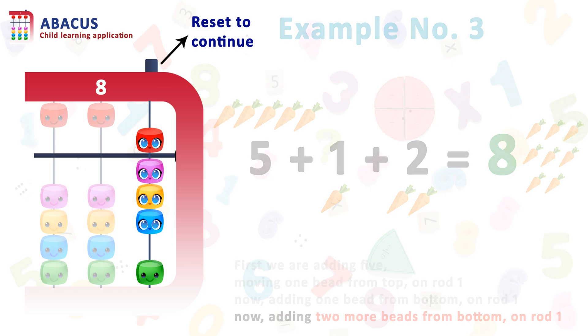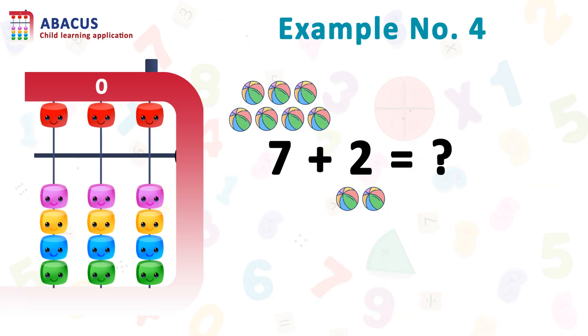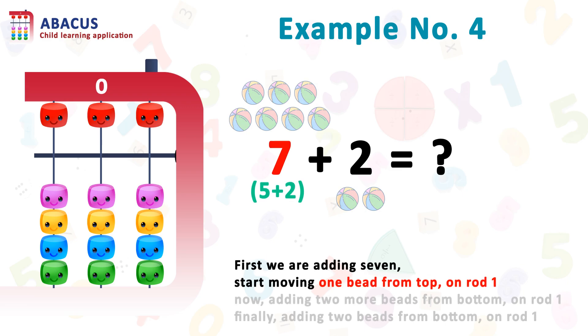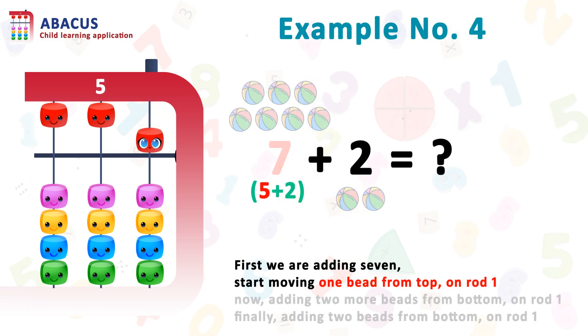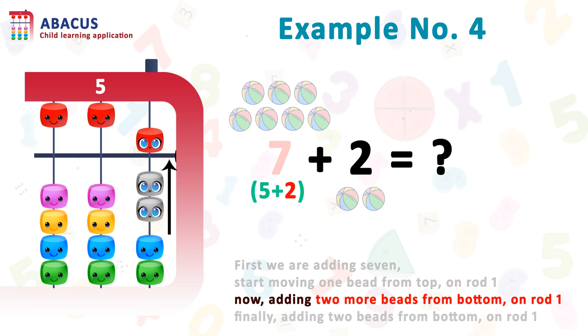Let's reset. Let's see one more example. Here we have seven balls and need to add two balls. First we are adding seven. For seven, we are moving the top bead downward on rod one using the index finger. Now move two beads from bottom to top on rod one using the thumb. So here we got seven balls.